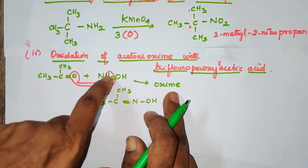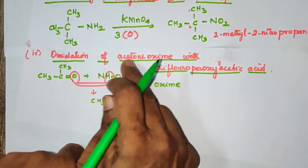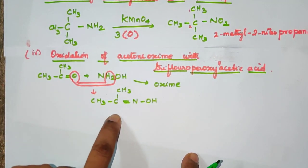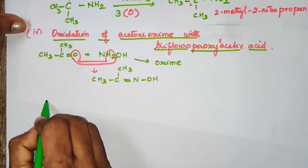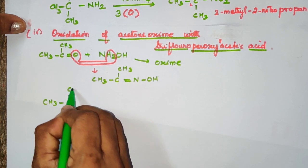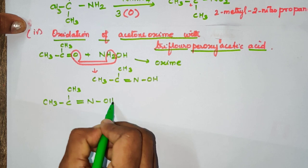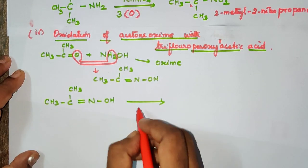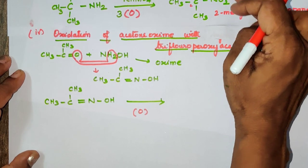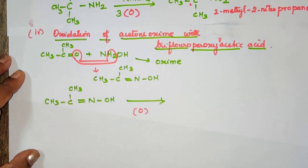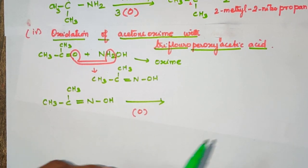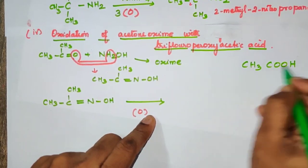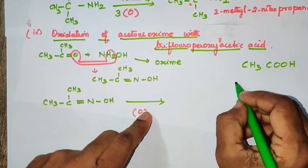Hydroxylamine is used to form the product. The compound CH3-C(CH3)=NOH is the oxime product. The oxidizing agent used is trifluoroperoxy acetic acid, CF3COOH — also called trifluoroperoxy acetic acid. This acid acts as the oxidizing agent in this step.